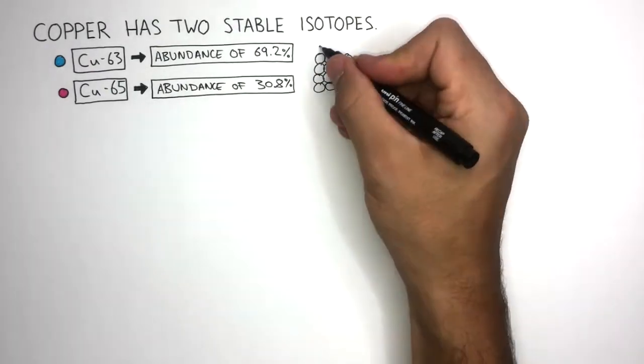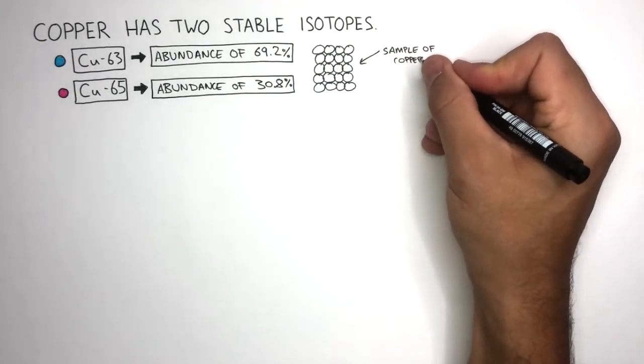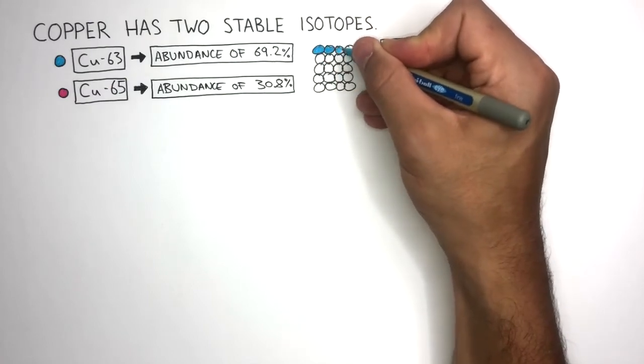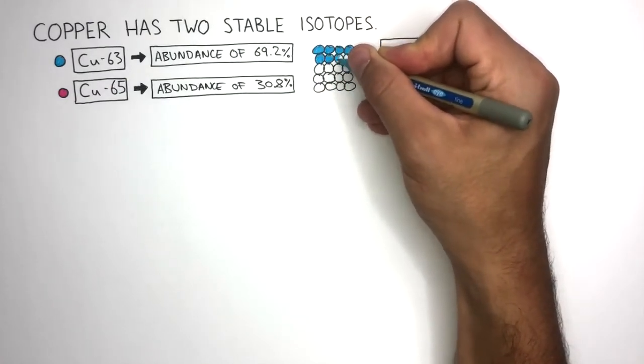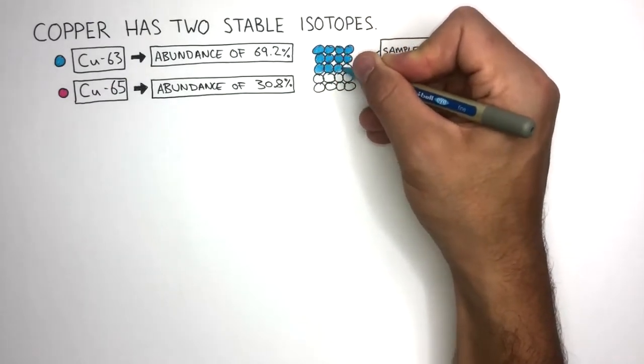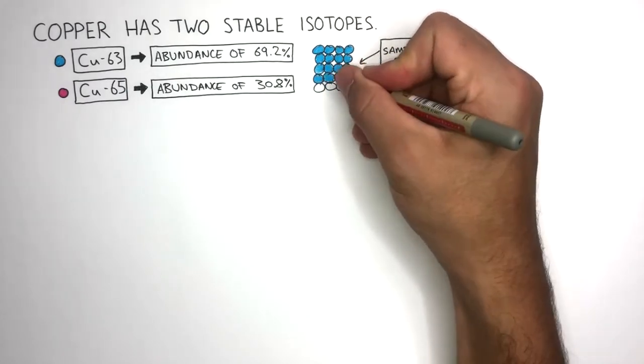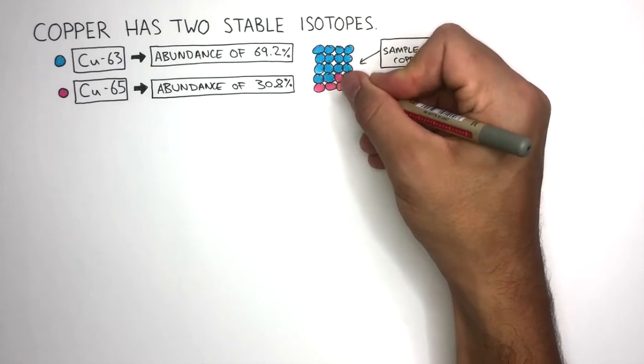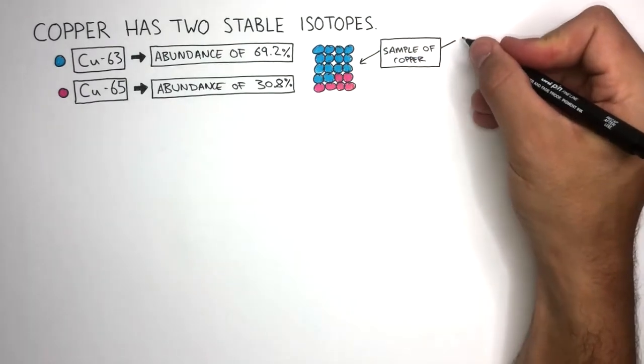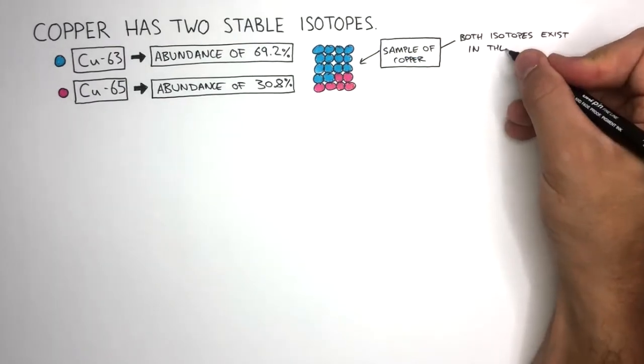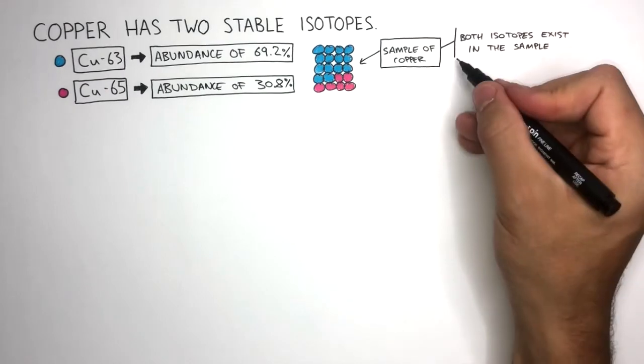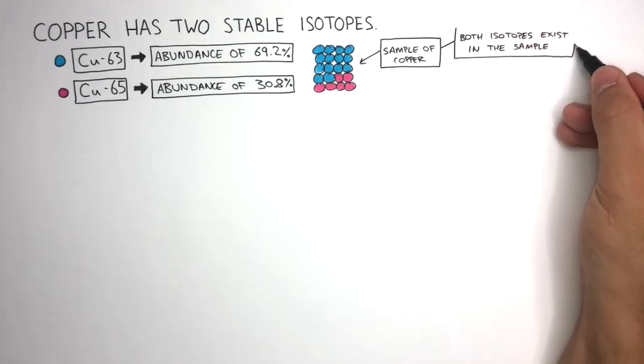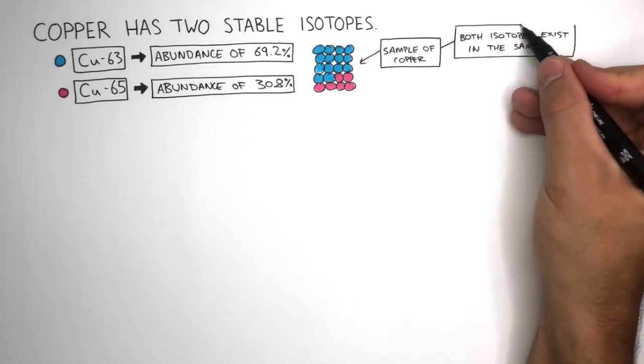This particle diagram represents any sample of copper. It shows how 69.2% of the sample is made up of copper-63 isotopes, and 30.8% of the sample is made up of copper-65 isotopes. You can see how both isotopes exist in the sample, and the majority of copper is made up of copper-63 isotopes.